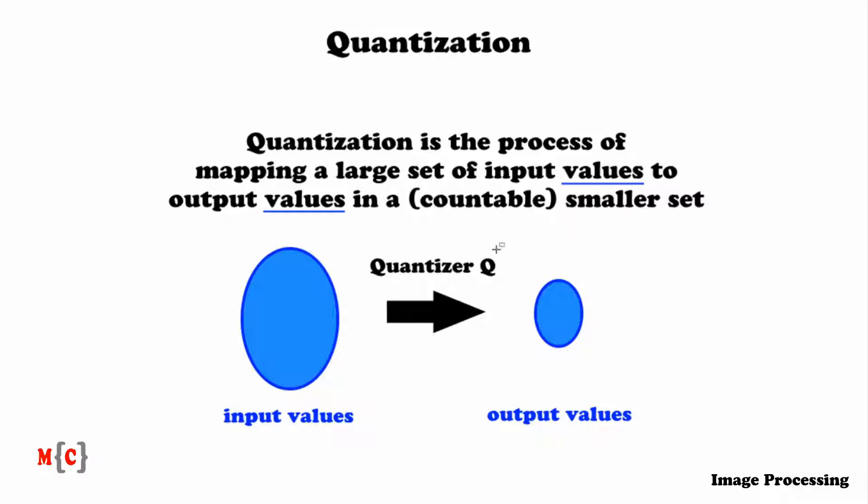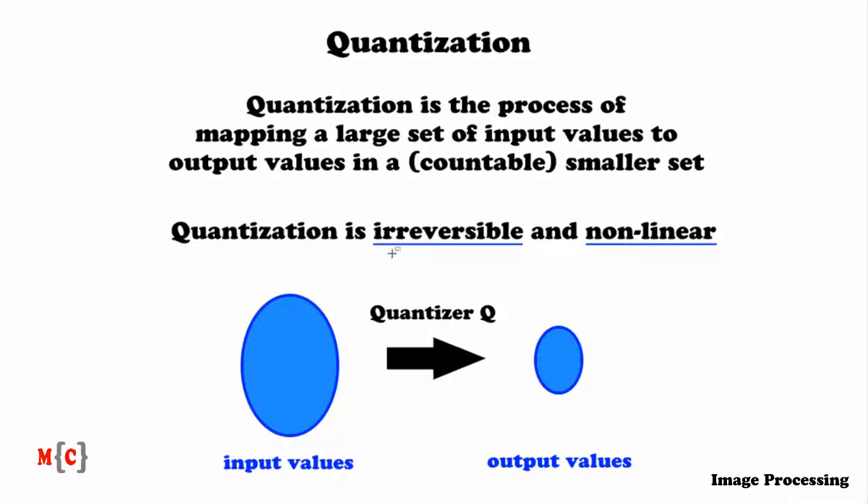This mapping, as a result, has the following two very important properties, which are that quantization is irreversible and it's non-linear. And let me explain why this is.